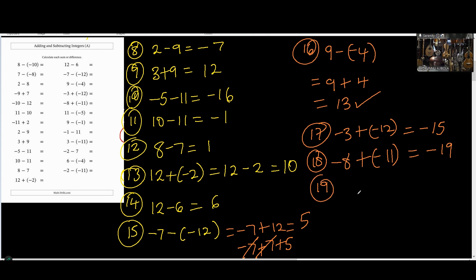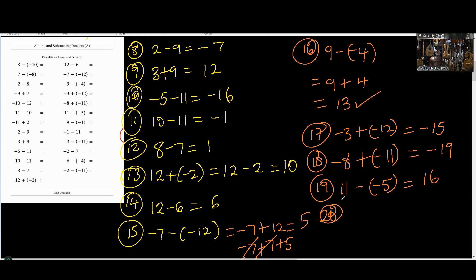Number 19: 11 minus negative 5. It's going to change to plus. Then 11 plus 5 is 16. Number 20: 9 minus negative 1. What should the answer be? It becomes 9 plus 1, so the answer is 10.